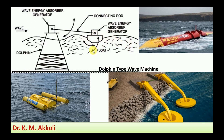Here in this sketch of the dolphin-type machine, this is the float. The float will rotate about its own fulcrum, and during this rotation we can generate energy. Even though the wave has a continuous movement in one direction, the float also moves up and down. This up and down movement is connected through a connecting rod to a converter. The wave energy absorber has an up and down reciprocating motion that is converted into rotary motion, generating continuous energy.